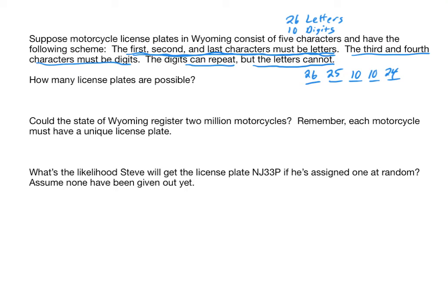So you're doing essentially five things. You can do first thing in 26 ways, second thing in 25 ways, third thing in 10 ways, fourth thing in 10 ways, fifth thing in 24 ways. So the total number of ways to do all of them in sequence is 26 times 25 times 10 times 10 times 24, which gives you 1,560,000. So there's 1,560,000 possible license plates under this particular scheme.